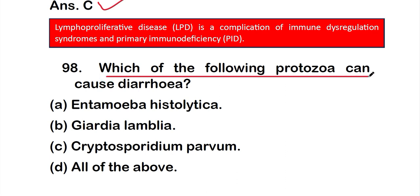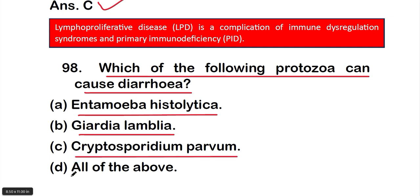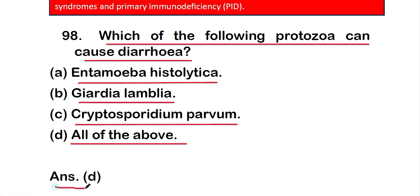Question number 98: which of the following protozoa can cause diarrhea? Options are: option A, Entamoeba histolytica; option B, Giardia lamblia; option C, Cryptosporidium parvum; option D, all of these. The right answer is option D — all of these protozoans can cause diarrhea.